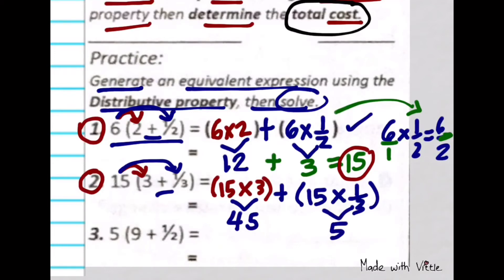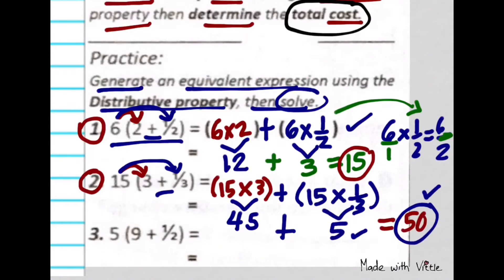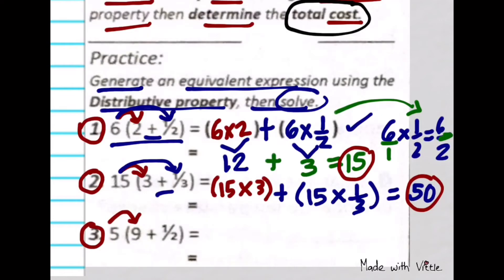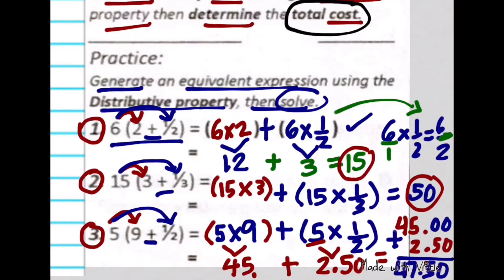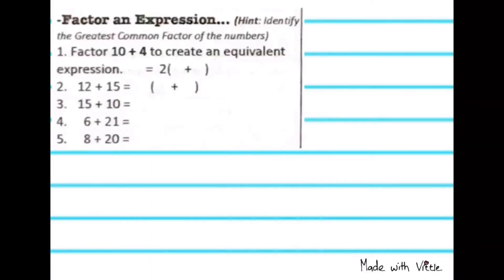5 times 1/2 is just like dividing 15 by 3. Next: 15 times (3 + 1/3). 5 times 2, then add it to your 45 — final answer is 50. Then: 5 times (9 + 1/2). Multiply first: 5 times 1/2 is like getting half of 5, which is $2.50. Add that to your 45 — the final answer is 47.50.